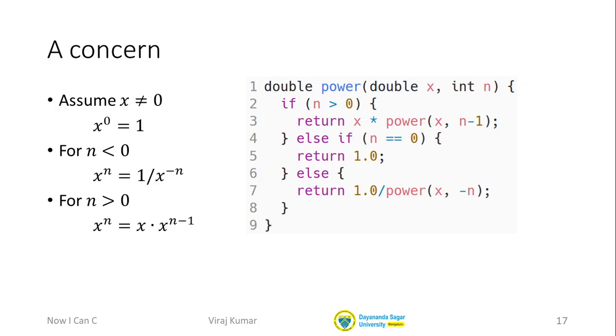We're now going to look at this same power function from a different perspective. So we have a slight concern. We have said in the mathematical definition that x must be non-zero. But if you look at our C code, nothing stops someone from calling this power function with x equal to zero.